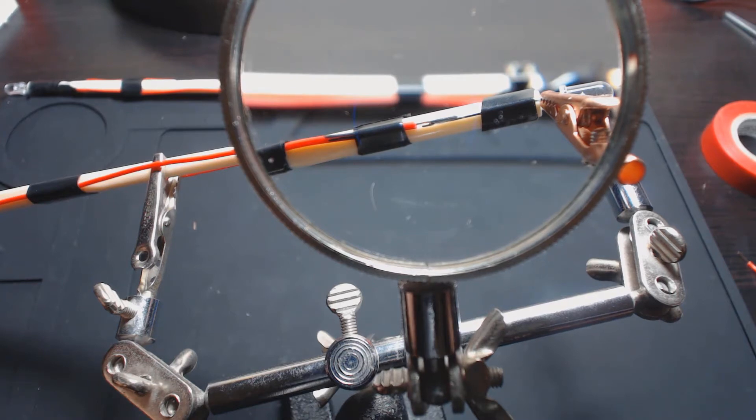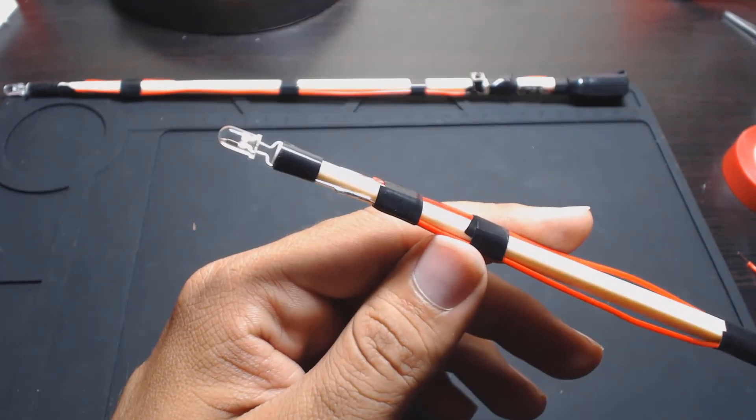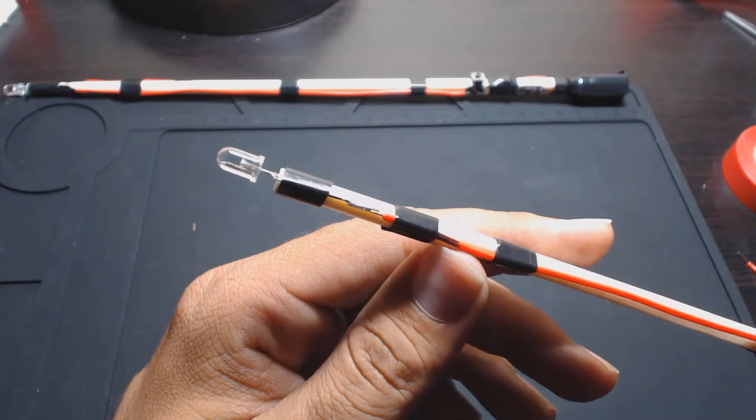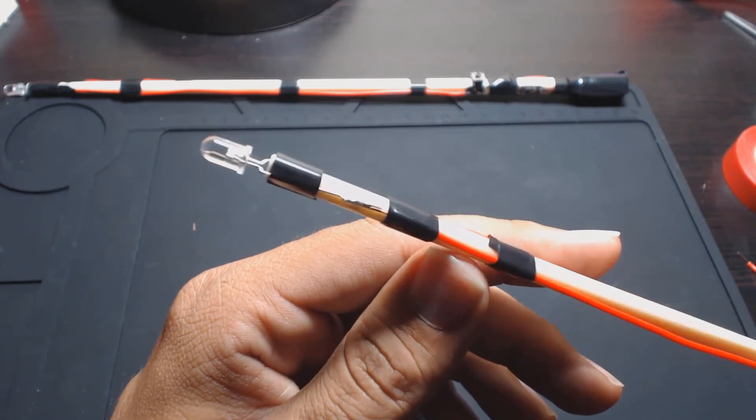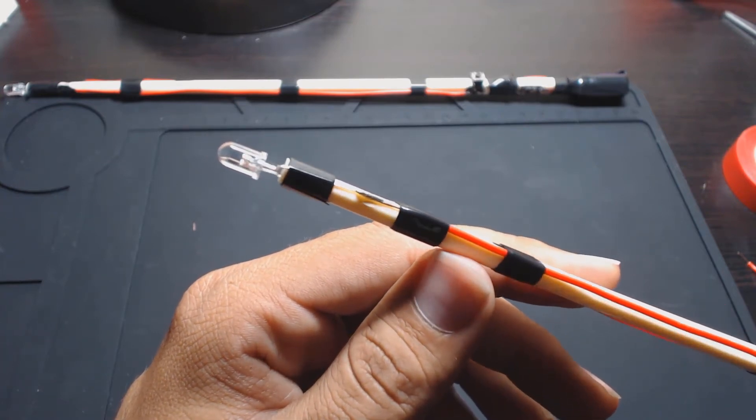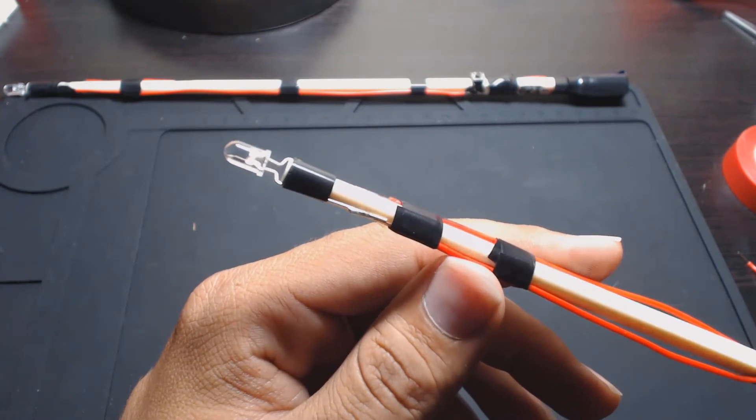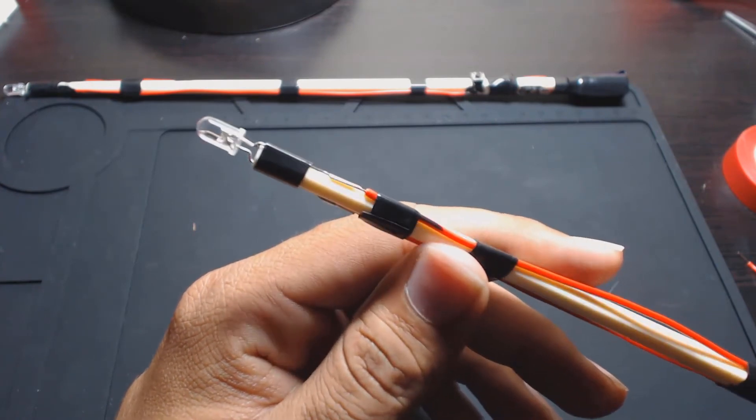Alright, so both sides are done now. I had a little trouble with the other side because the wires weren't quite lining up right, so I just had to use some pliers and probably needed to clean the tip of the soldering iron a little better.